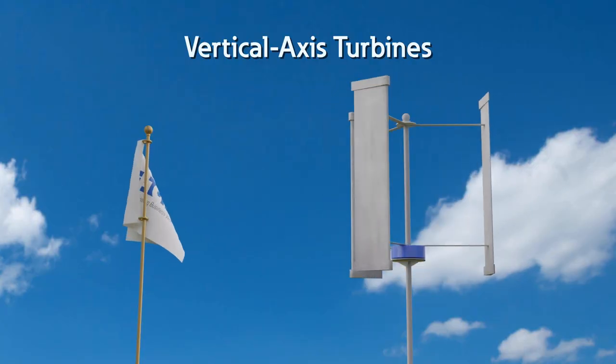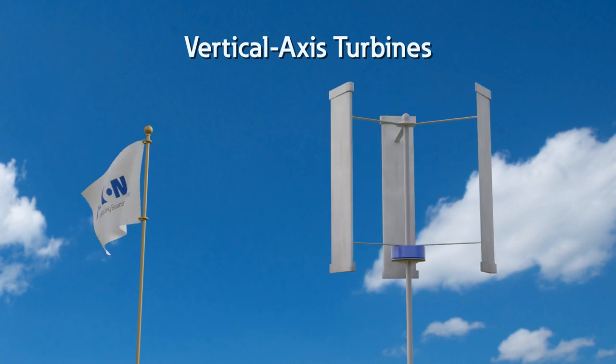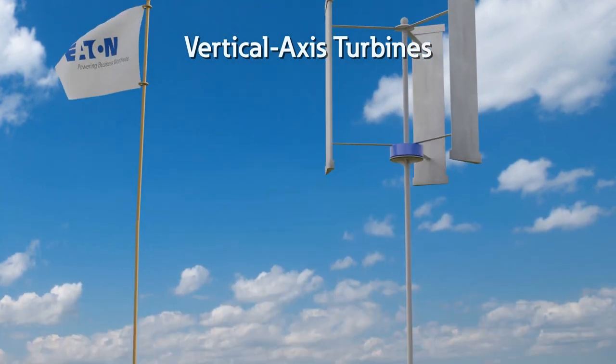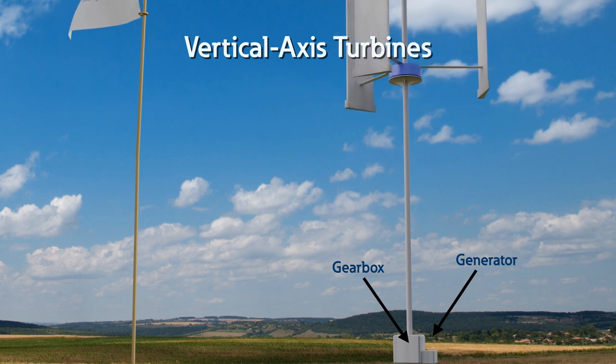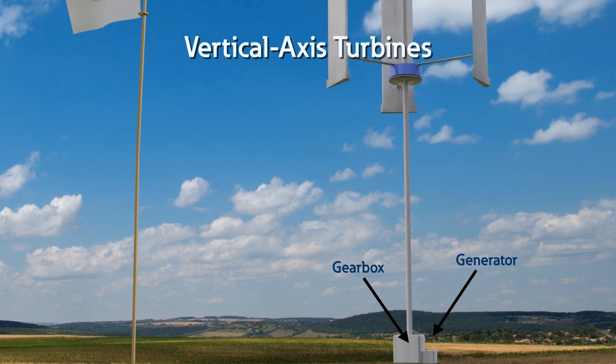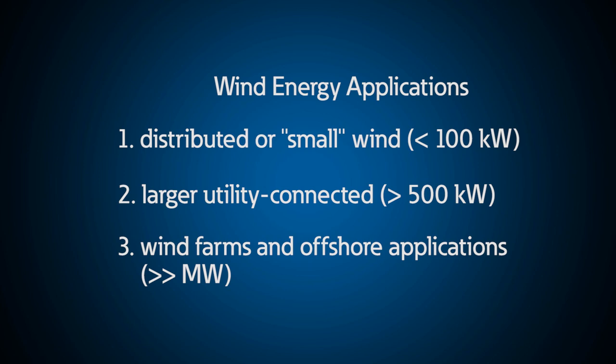Vertical axis wind turbines, like the one we have here at the PSEC, have their axis perpendicular to the wind streamlines and vertical to the ground. This arrangement allows the generator and gearbox to be located close to the ground, facilitating service and repair. There are three main applications where wind turbines are used: distributed or small wind, which may be horizontal or vertical axis type; large utility-connected wind farms; and offshore applications, both of which have historically been horizontal axis type.